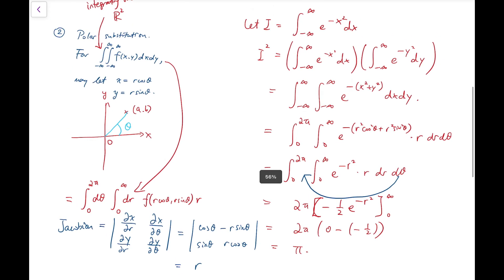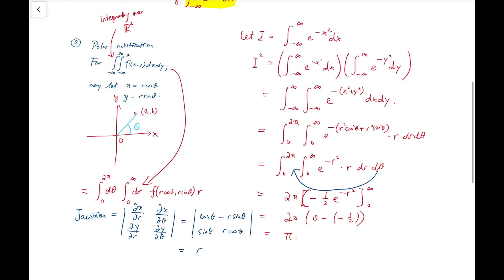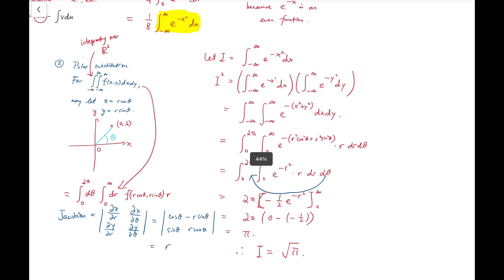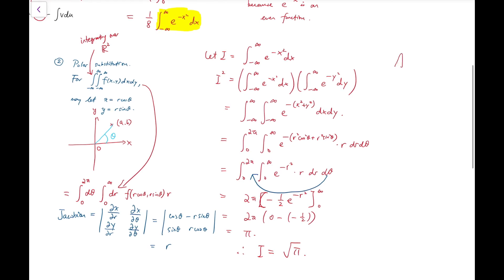So that means by considering a double integral instead, multiplying something else, I know that I squared equals to pi. And because we know I is always positive, therefore I equals the square root of pi. So that means in conclusion we know that our answer is actually equal to the square root of pi over 8. And we've solved the integral.